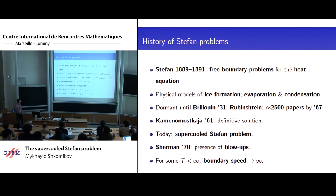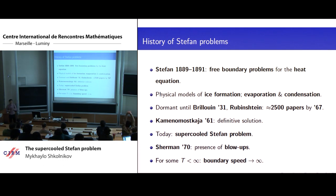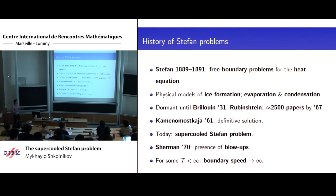There is some consensus that the paper by Kamenomostskaya from 1961 is, in some sense, the final solution and sort of the end of the subject — in the sense that she managed to construct generalized solutions of Stefan problems in any dimension for any number of phases. She gives existence, uniqueness, and also numerical schemes — essentially everything you might want to know about Stefan problems.